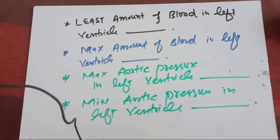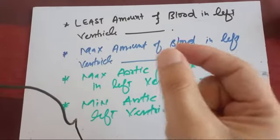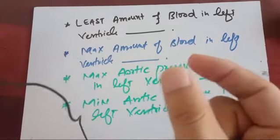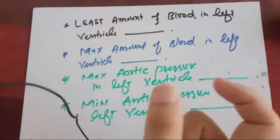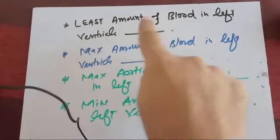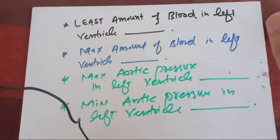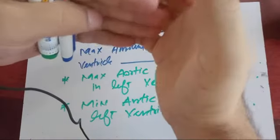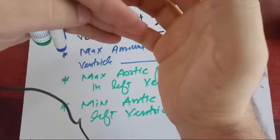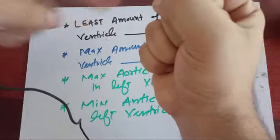These are very tricky MCQs — the CPSP plays a little trick, so we have to pick their trick in order to answer correctly. There is a very brief concept in each MCQ. The least amount of blood in the left ventricle is present during which phase of the cardiac cycle? That is isovolumetric relaxation. During systole, maximum blood comes out from the left ventricle during the ejection phase.